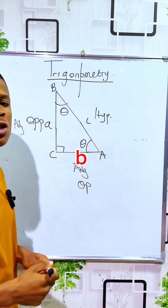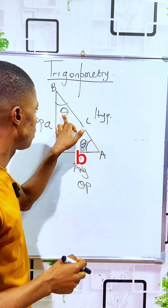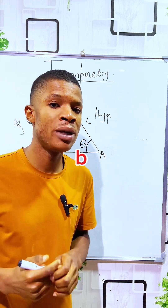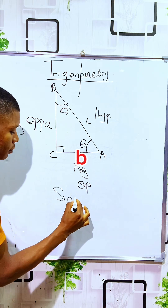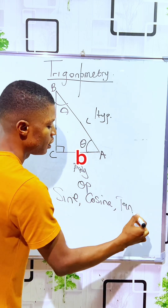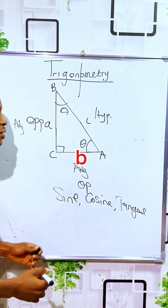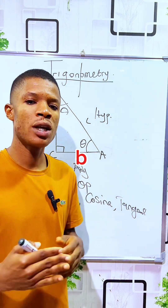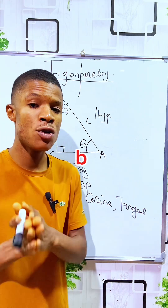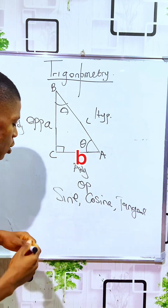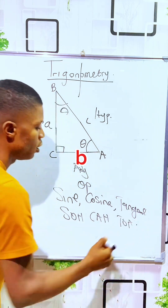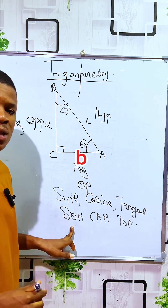We basically have three trigonometrical ratios: the sine, the cosine, and the tangent. When we talk about ratios, we are comparing two sides. We use a common acronym to remember them, which is called SOH-CAH-TOA, showing you how each ratio is defined.